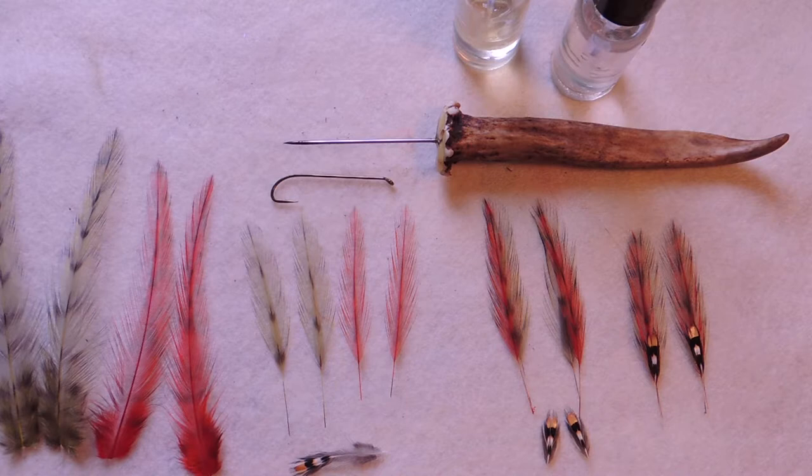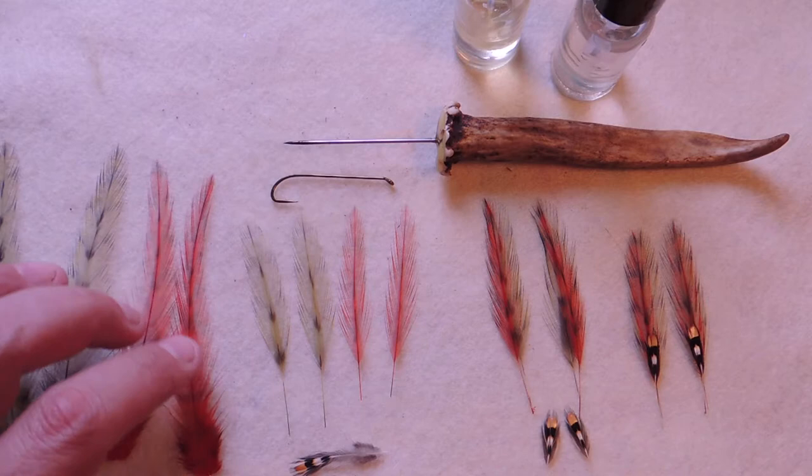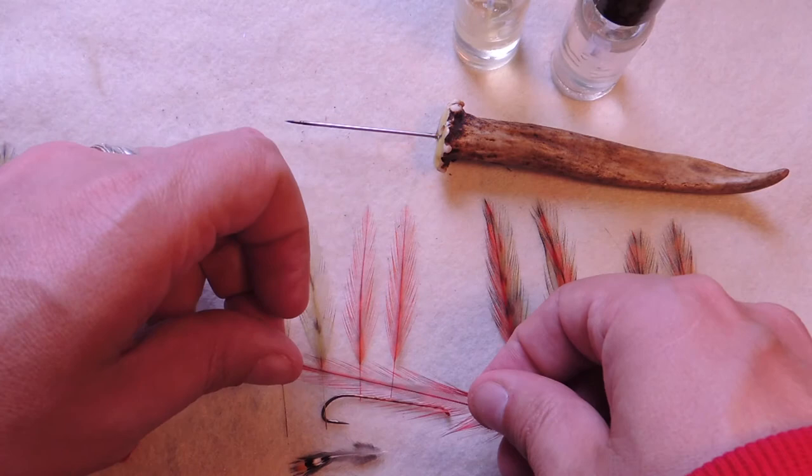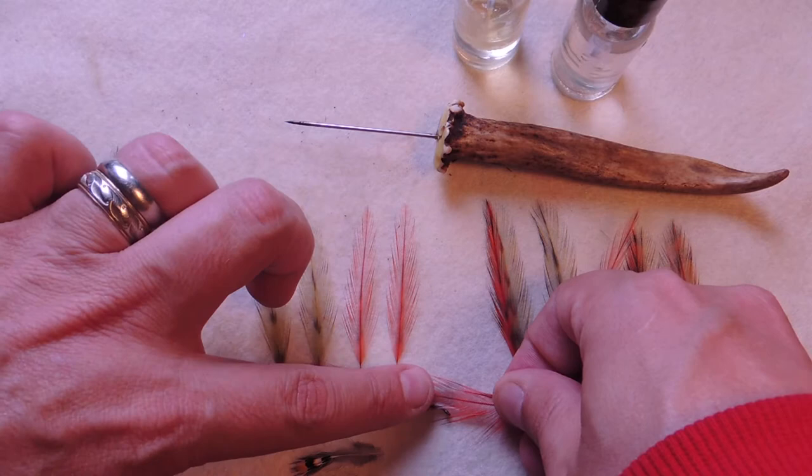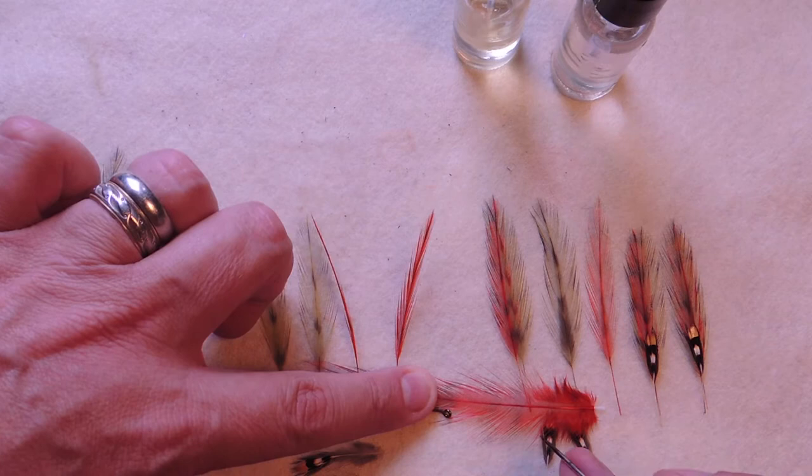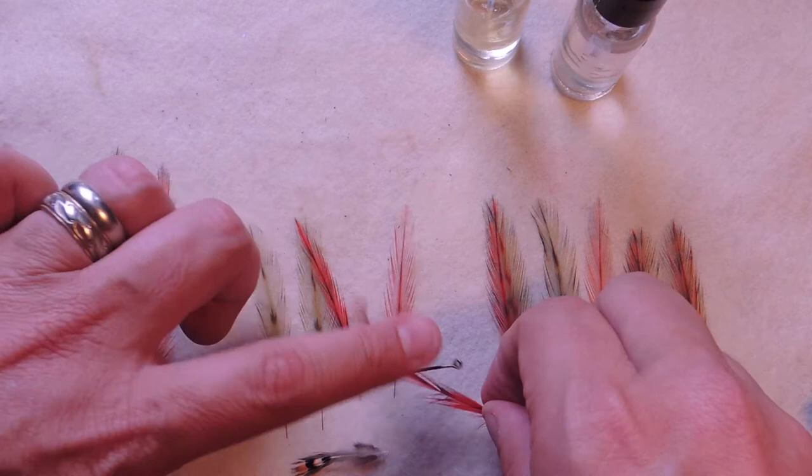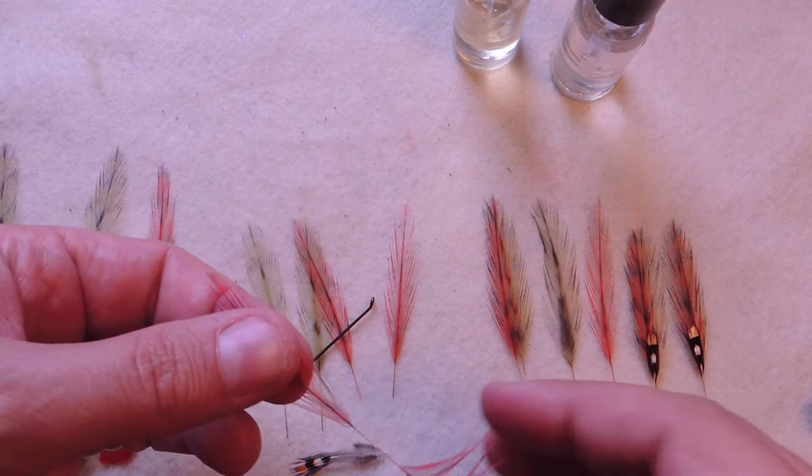So let's just go through the construction of the wing. I've got here two olive grizzly hackles and two red hackles. First thing we're going to measure these out. I just lay it down to where I want it then I'll take something like scissors or a bodkin and just pull out the hackles where I want.